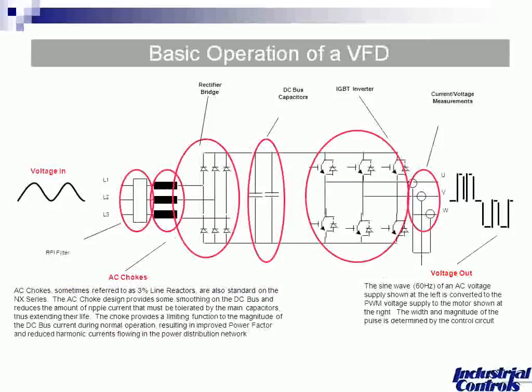The output of a VFD is actually a DC output — it's a simulated AC sine wave. The VFD is simulating the sine wave to the motor; the motor doesn't know any difference. For measuring the output, true RMS meters work well because they cut down the peaks and valleys of that sine wave. However, the best thing to use is the face of the variable frequency drive itself — it's always monitoring the output. An old analog meter is also good because it smooths out the reading.